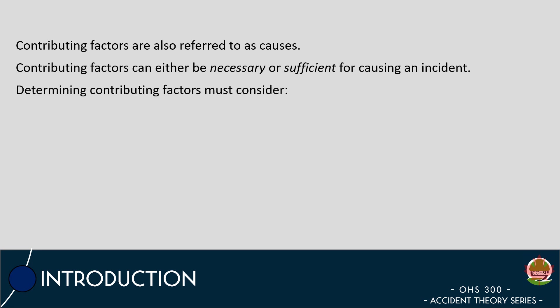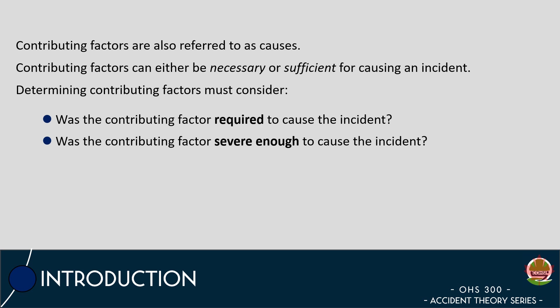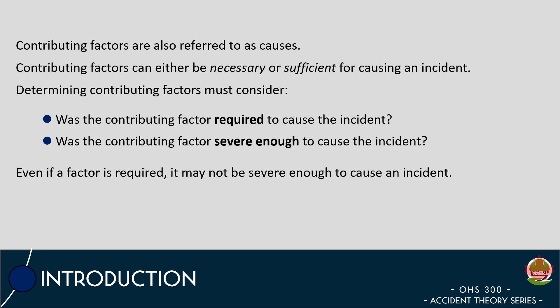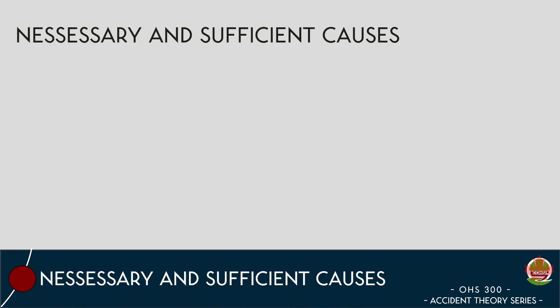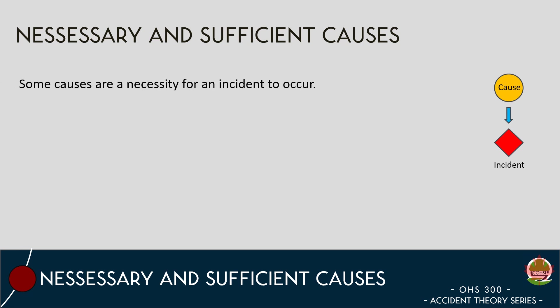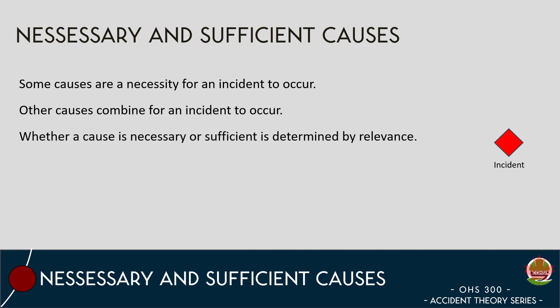To determine what type of causation exists in the sequence of an incident, the first step is to determine whether a contributing factor was required for the incident to take place, or whether the contributing factor was severe enough to cause an incident. In many cases, a factor that is required may not be sufficient to cause an incident, and inversely, something that could be considered insufficient under normal circumstances could exist in a severe enough quantity that it could cause an incident. When investigating the causes that lead up to an event taking place, some causes are an absolute necessity, while others may combine to create enough causation for an event to occur.